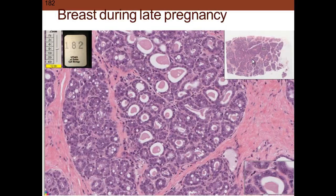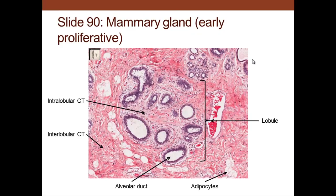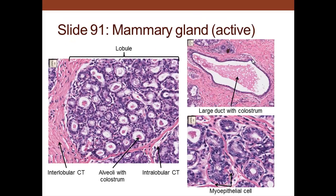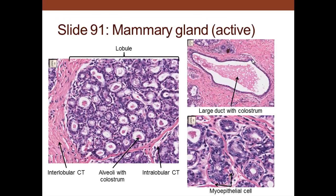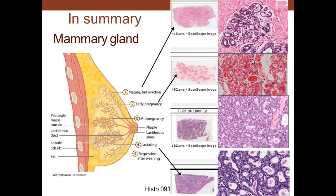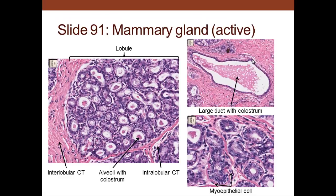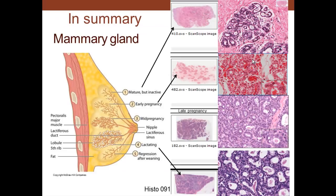The developed lobules will have a duct that empties out into the nipple. This is the early proliferative phase — a lobule with alveolar ducts and connective tissue. When the gland is active in a lactating mother, there is abundant connective tissue and colostrum — the first milk — in the lumen. The myoepithelium surrounds the alveoli. In summary, in the mature but inactive mammary gland, lobules are not numerous and the lumen is not very large; in early pregnancy, development of lobules increases.